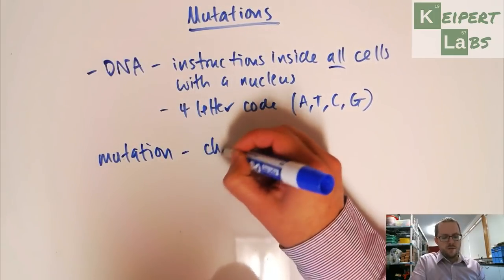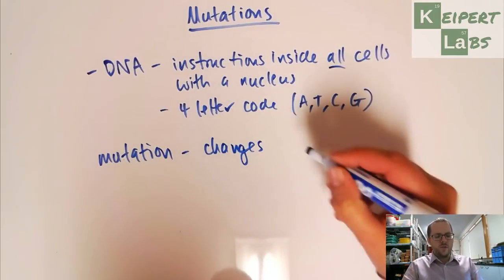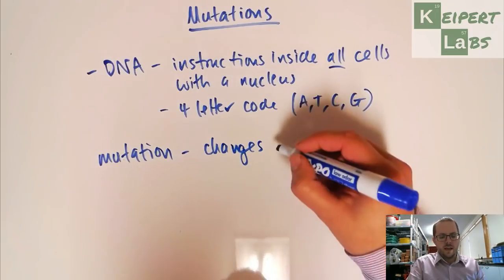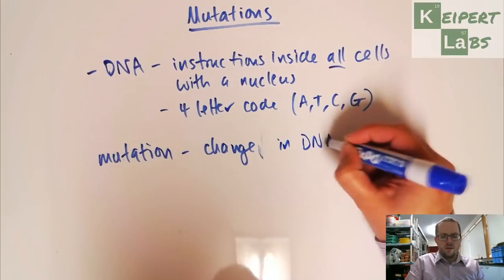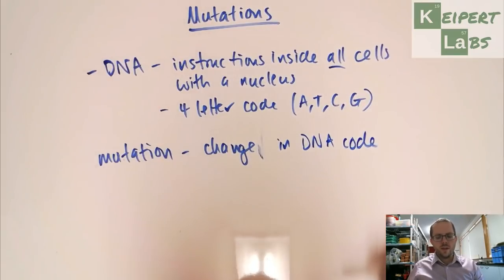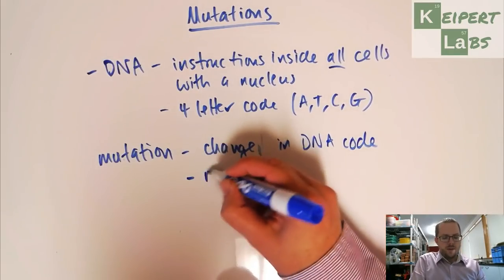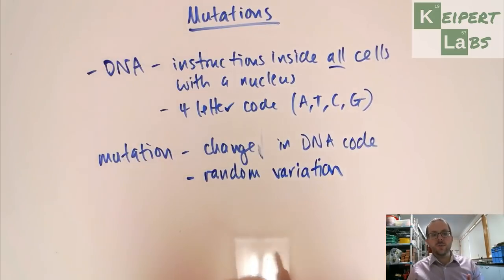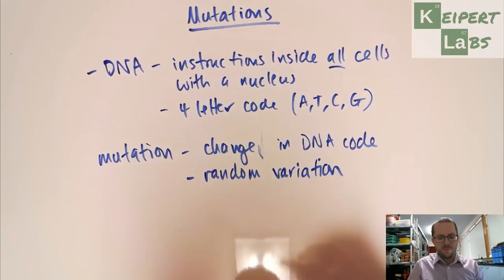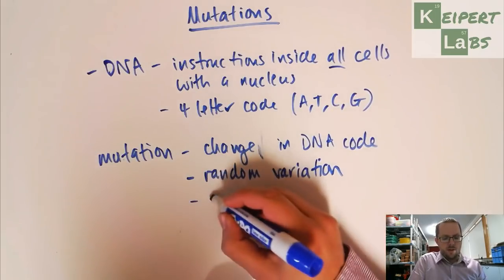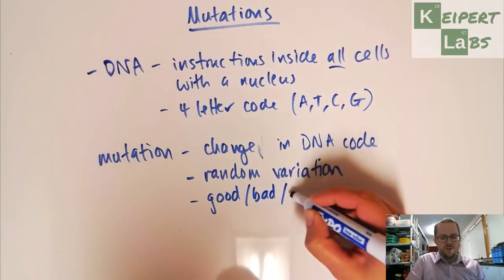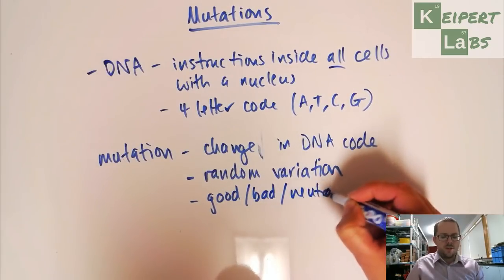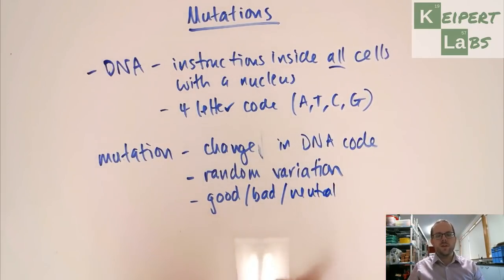So mutations, or this idea of a mutation, is a change in the DNA code. It's a random variation. So it has to do with chance. It's not necessarily a targeted sort of thing. And they can be good, bad, or neutral in terms of the effect that they end up having on the organism.